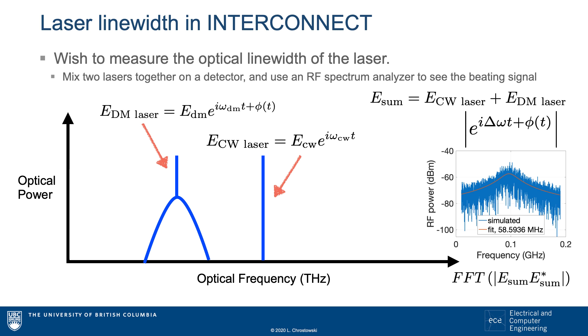The signals that are left will be the difference frequency signals. The signal will be a sinusoid at the difference frequency with fluctuations. We take the Fourier transform of this time domain signal to obtain the frequency response. We see on the RF spectrum analyzer the difference frequency, together with a linewidth that comes from the laser fluctuations. The linewidth measured here is the same linewidth as the original laser.